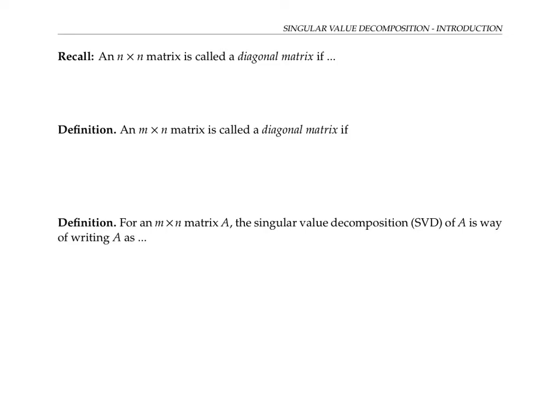So up to now, we've only talked about n by n square matrices being diagonal matrices. We said that a square matrix is a diagonal matrix if all of its non-zero entries lie on the diagonal. We'll say that an m by n matrix, where m and n might be different, is called a diagonal matrix if all of its non-zero entries lie on its diagonal, where the diagonal entries are the entries whose row number and column number are the same.